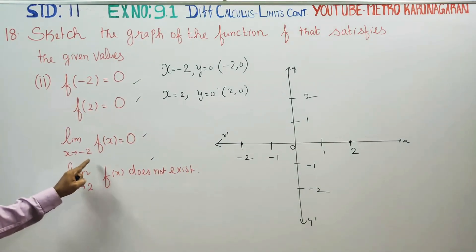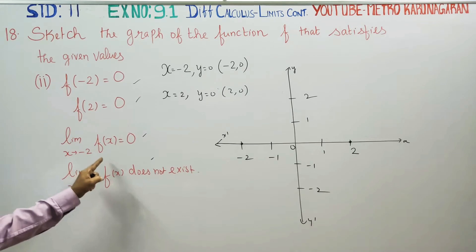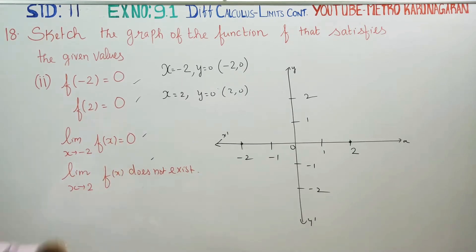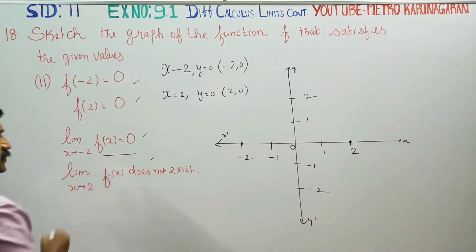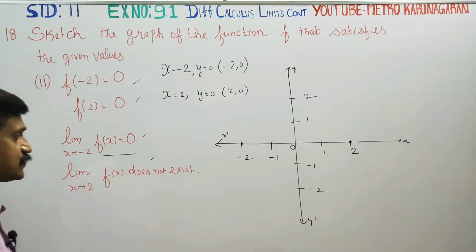The limit as x turns to minus 2 of f of x is equal to 0. So as x turns to minus 2, f of x is equal to 0.